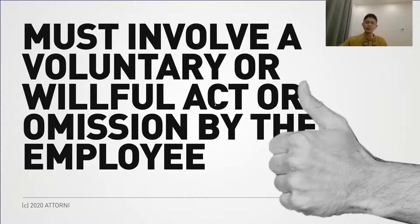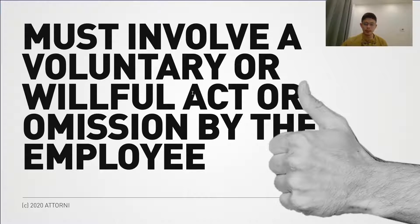So how do we determine if an act or omission by an employee can qualify as an offense analogous to the causes for termination? There is no hard and fast rule, but as a rule of thumb, the cause must involve a voluntary or willful act or omission by the employee, since all the mentioned grounds involve an act or omission.